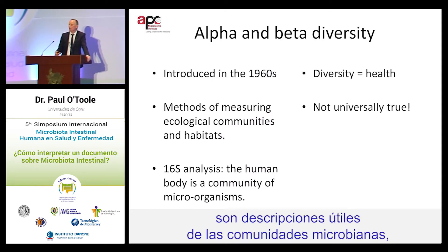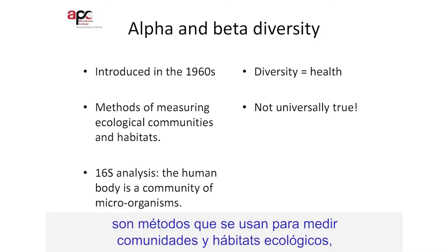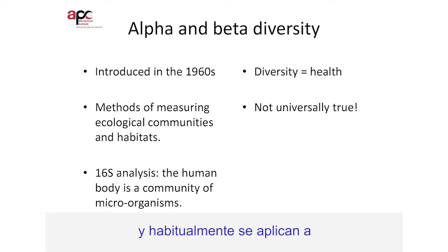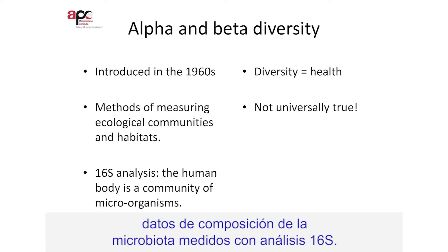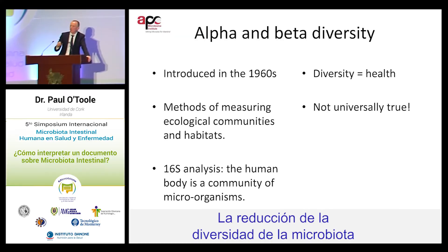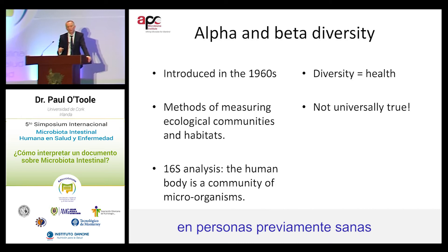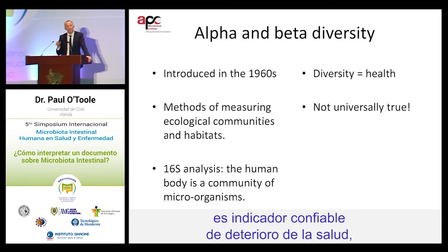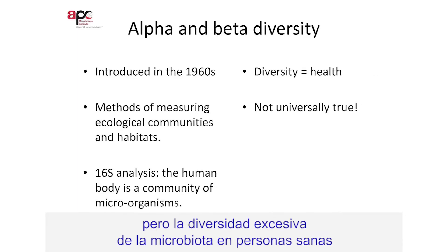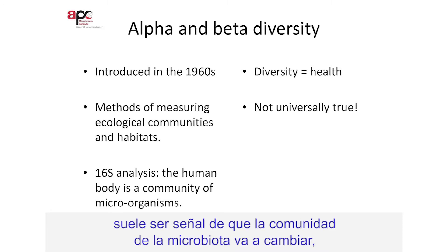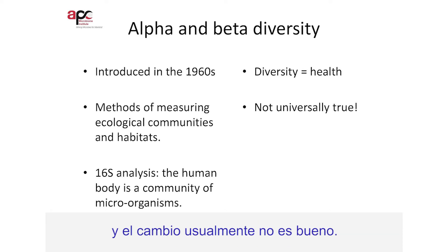Alpha and beta diversity are useful descriptions of microbial communities — they are generally methods of measuring ecological communities and habitats. They're typically applied to microbiota composition data measured by 16S analysis. A reduction in microbiota diversity in previously healthy people is reliably an indicator of loss of health, but excessive microbiota diversity in healthy people is usually a sign that the microbiota community is going to change, and it's usually not a good change.